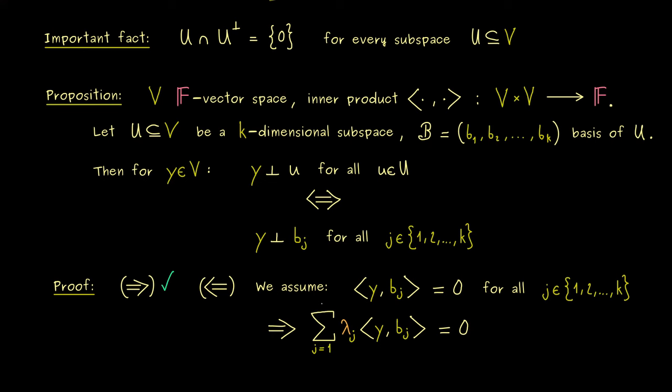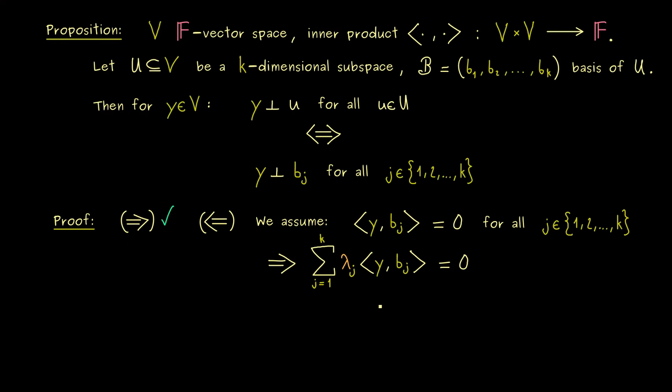So now we just have the sum from 1 to k. And now at this point, the linearity in the second argument for the inner product can come in.